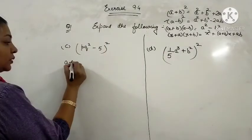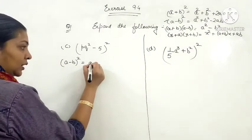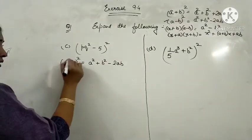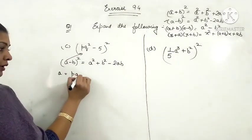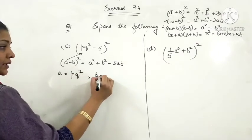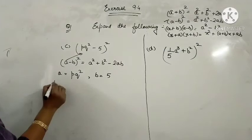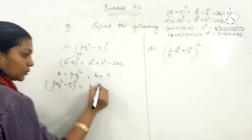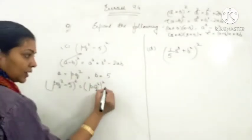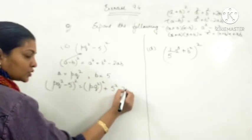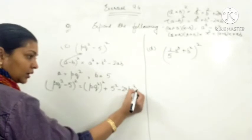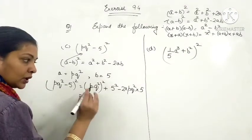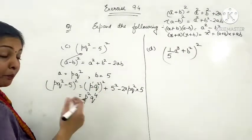Now use the formula A minus B whole square: A squared plus B squared minus 2AB. Here A is P cubed squared and B is 5. Substituting the values: P cubed squared minus 5 whole square equals P cubed squared whole square plus 5 squared minus 2 into P cubed squared into 5. This gives P to the power 6, because powers get multiplied.